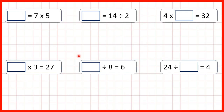Here we have some missing number division and multiplication problems. But these first two problems aren't really missing number problems at all, because all we have on this side of the equal sign is an answer box. It doesn't matter whether the equal sign comes at the start of a calculation like it does here, or at the end like it usually does — we do the same thing.